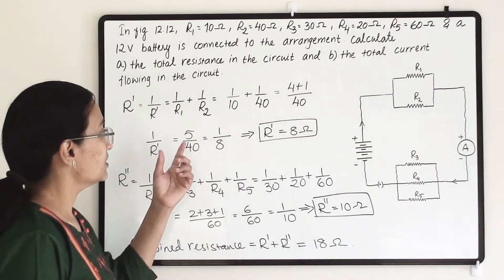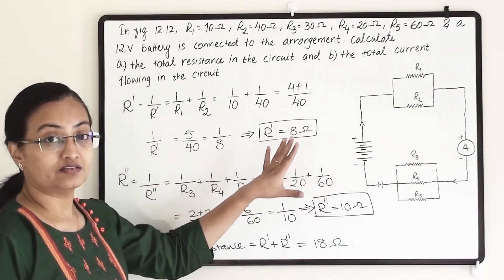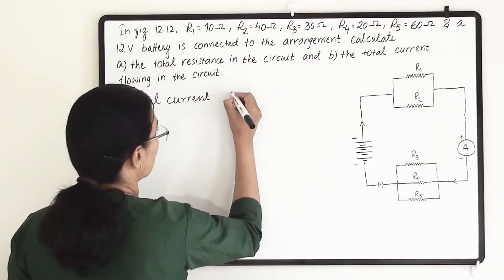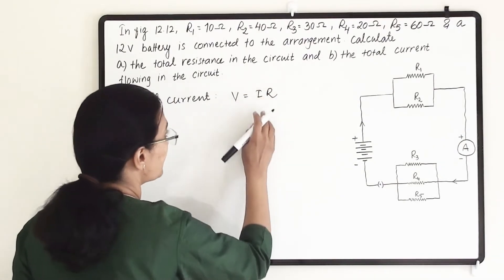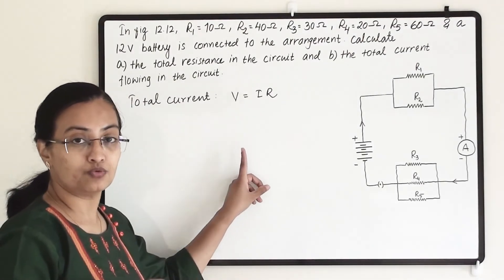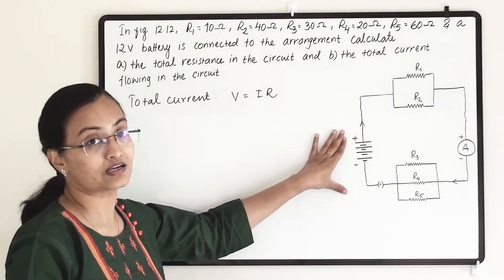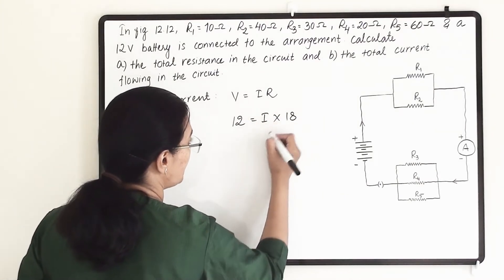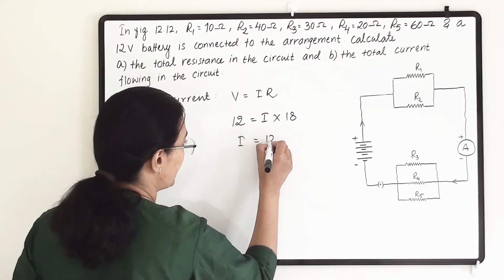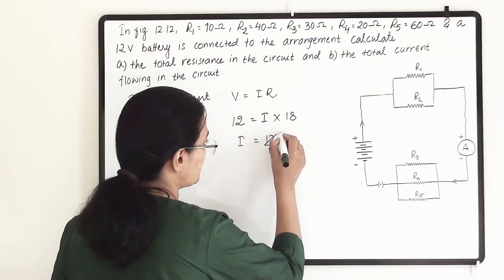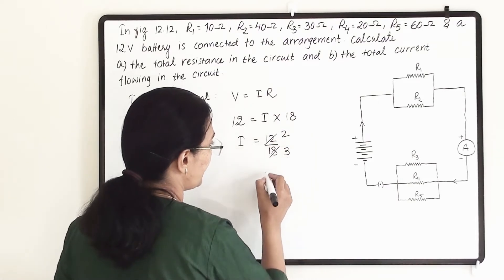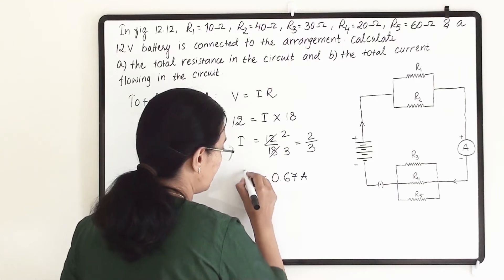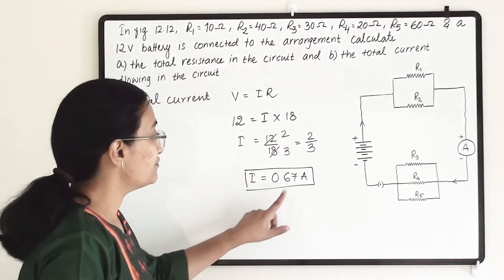Now we have to find the total current from the circuit. We use V equals IR, where R is the combined resistance of 18 ohm. V equals 12 volt, I we need to find out, and R equals 18 ohm. So I equals 12 divided by 18. Dividing both by 6 gives us 2 divided by 3, which equals 0.67 ampere. This is the combined current flowing from the circuit.